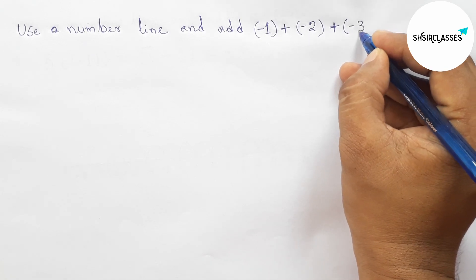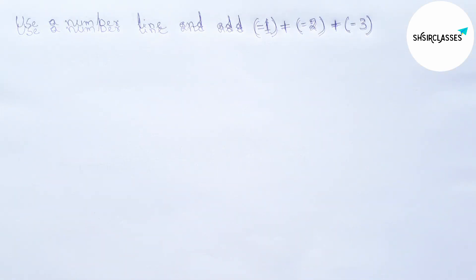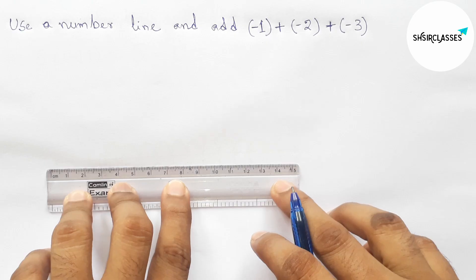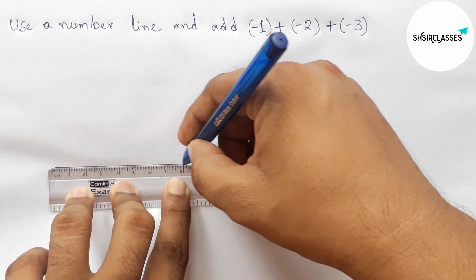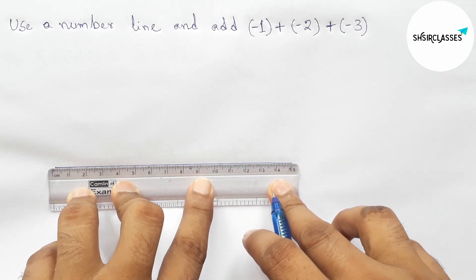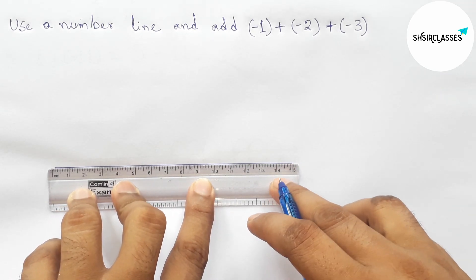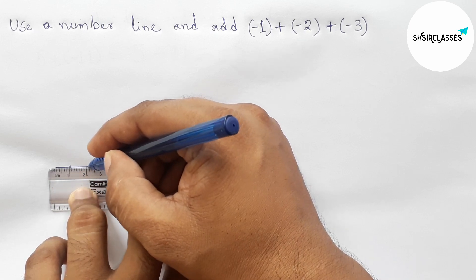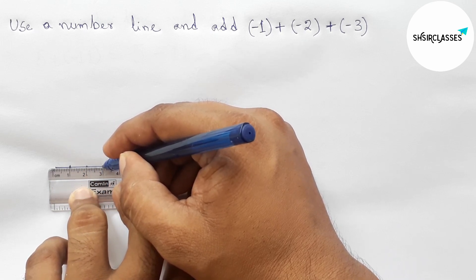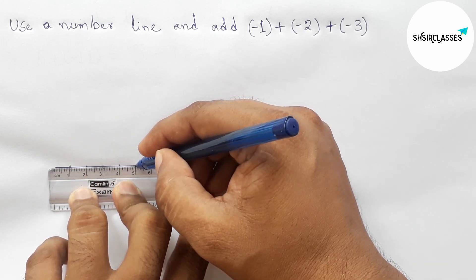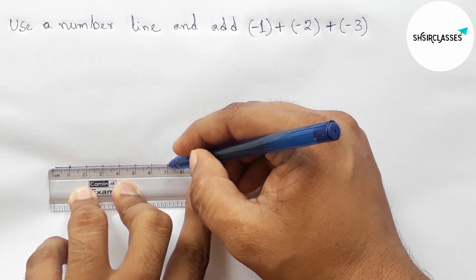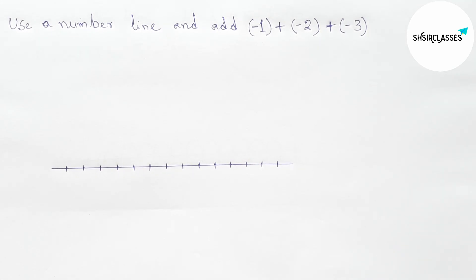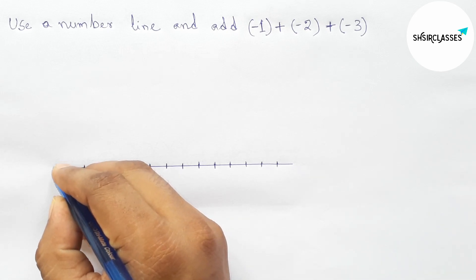Let's start the video. First of all, let us make a number line perfectly. First, drawing a line segment of any length, then using a scale and marking the numbers on the line. By using a scale you can get a perfect number line.